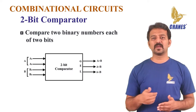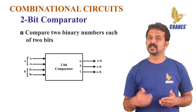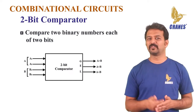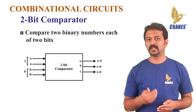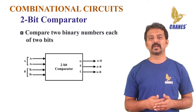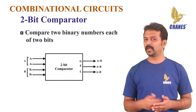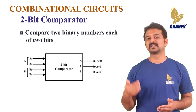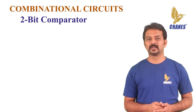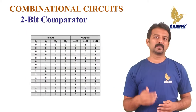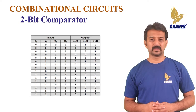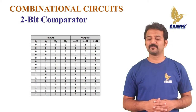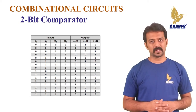This comparator produces three outputs: G, where G equals 1 if A is greater than B; E, where E equals 1 if A equals B; and L, where L equals 1 if A is less than B. The truth table of this comparator depicts the various input and output states for a two-bit comparator.